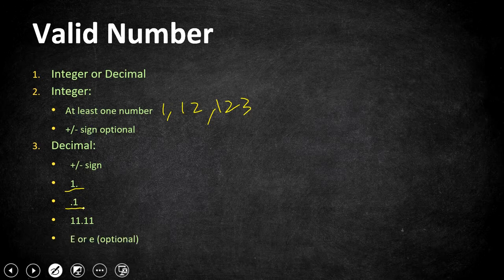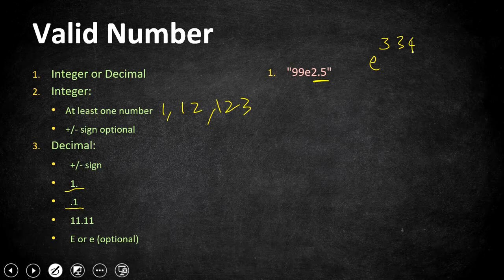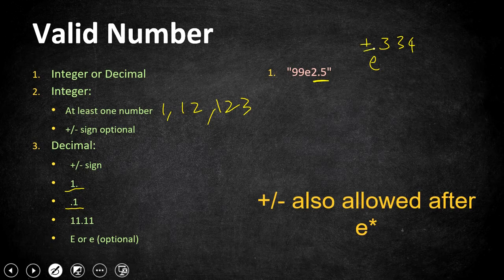An optional 'e' for exponential value is also allowed after the decimal. Now let's look at the invalid cases. The first example is 99e2.5 — this is invalid because after 'e' there should not be a decimal. After 'e' it can be a whole number with any digits, but it should not have a decimal or a plus or minus sign.